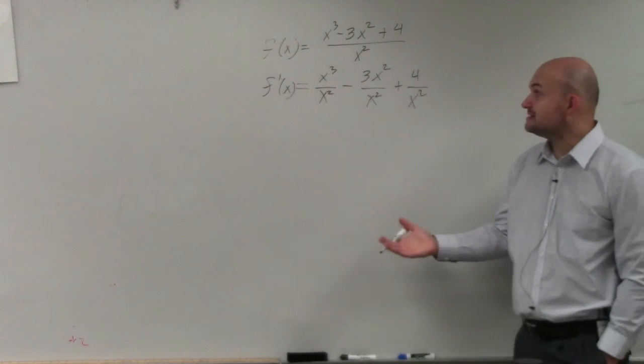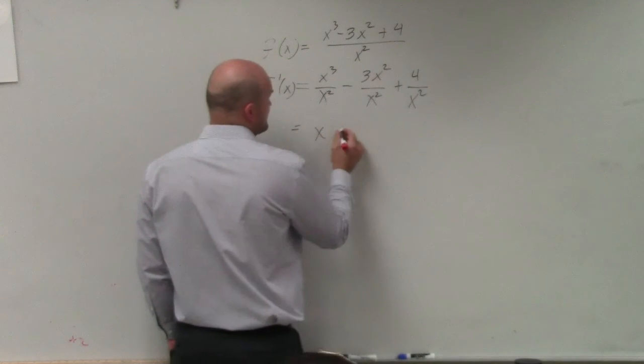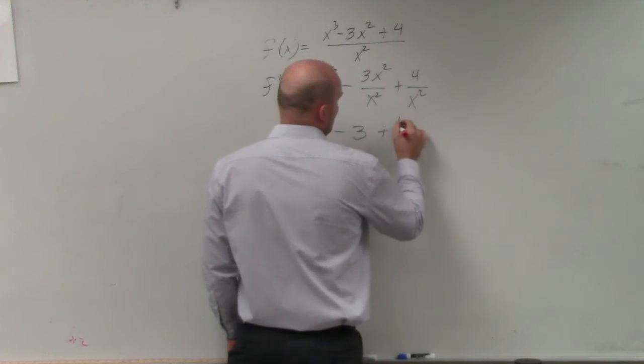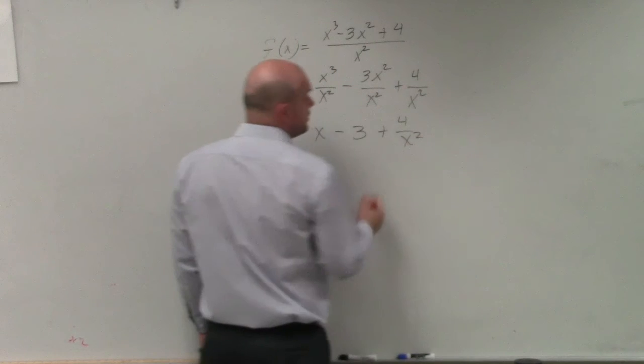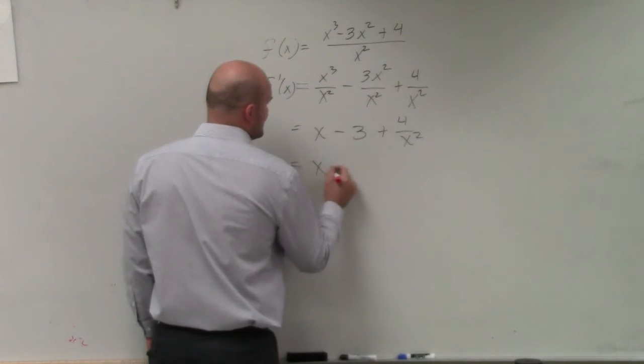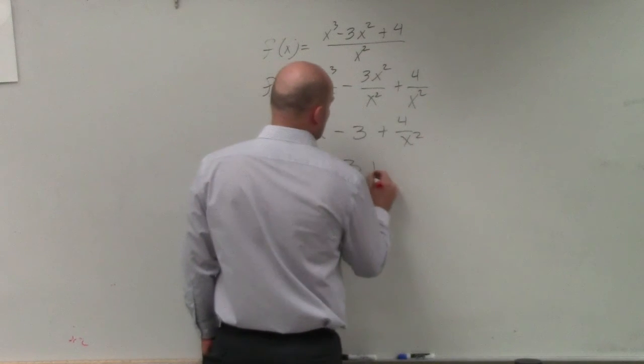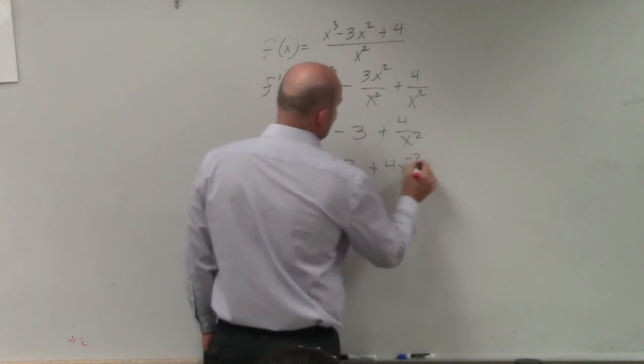So I can rewrite it, and now I can just simplify that to x minus 3 plus 4 over x squared, which I can rewrite again as x minus 3 plus 4x to the negative second power.